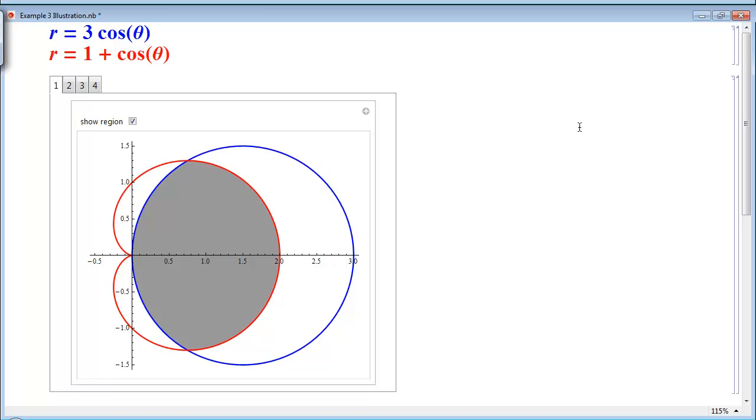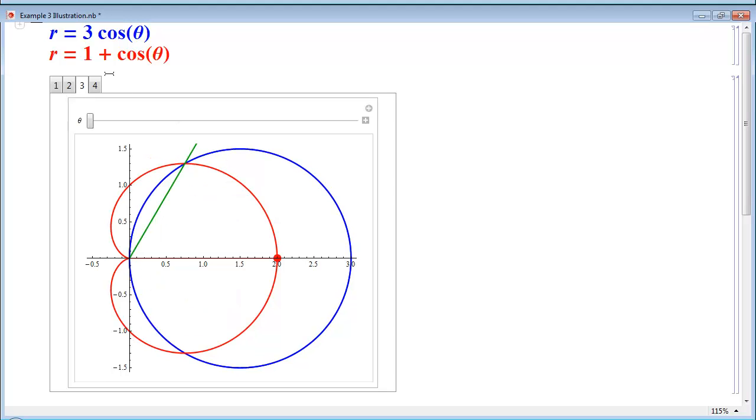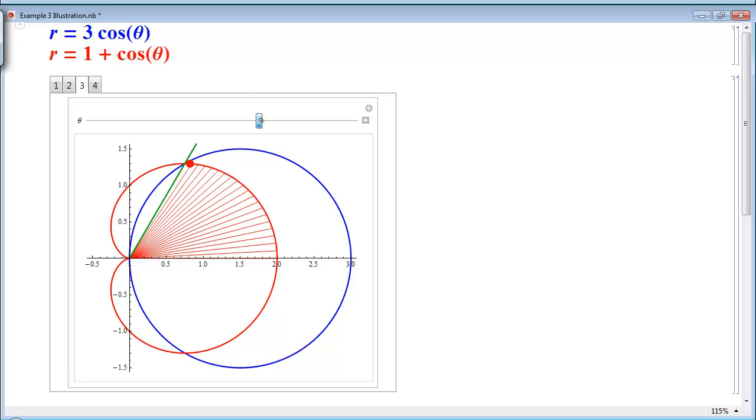In this case, it will be simplest to find the area of half of the region and double it. So we'll focus on the top half of the shaded area here. Our first intersection point is at pi over 3. So what will happen is as we integrate, we'll need to start with the first curve, the cardioid. And then that will integrate till we reach pi over 3.